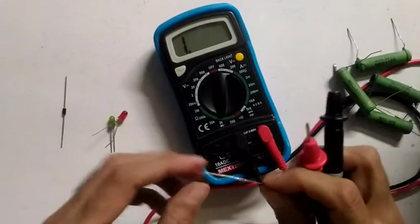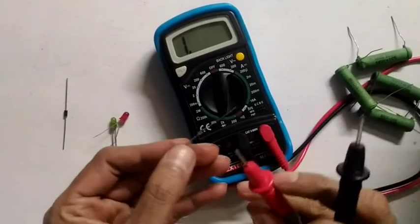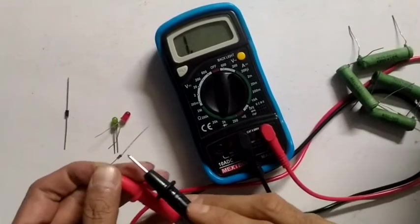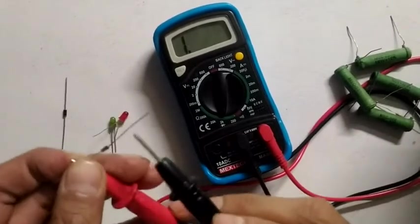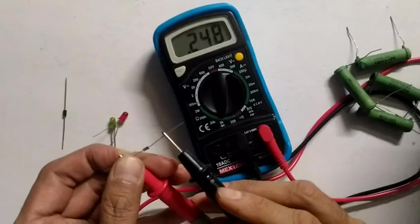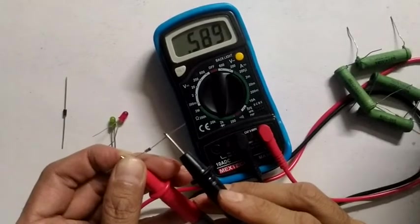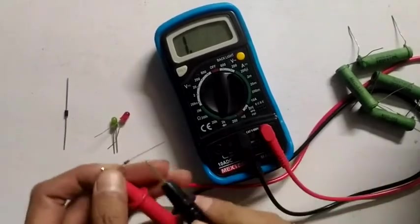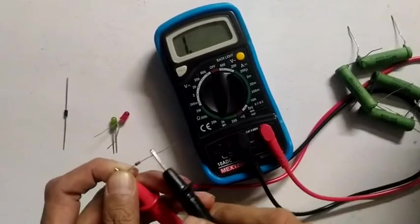This is another 1N4148 diode. Here I can clearly see the black mark over here. Again, this shows a perfect forward bias. So this diode is also good.